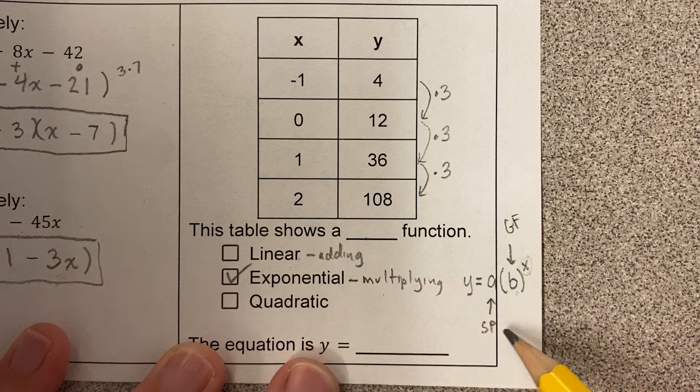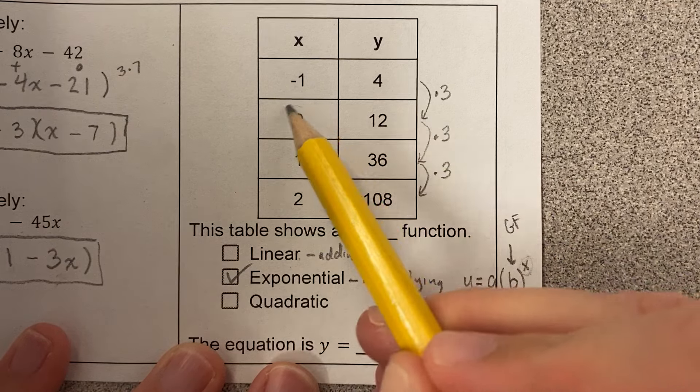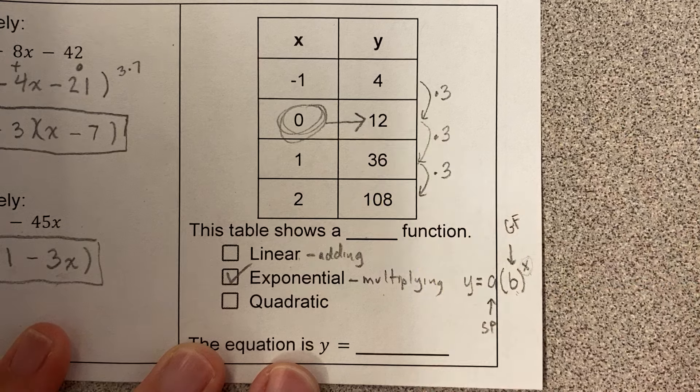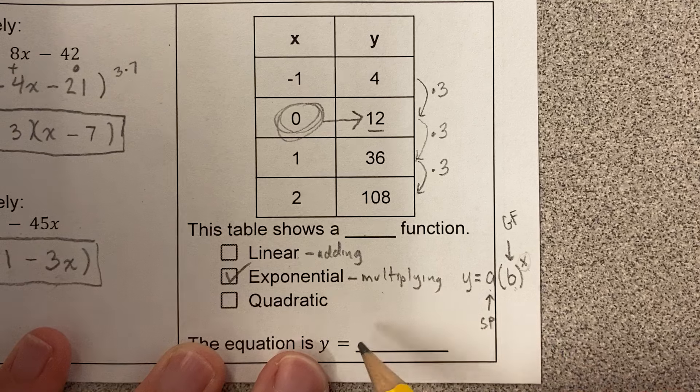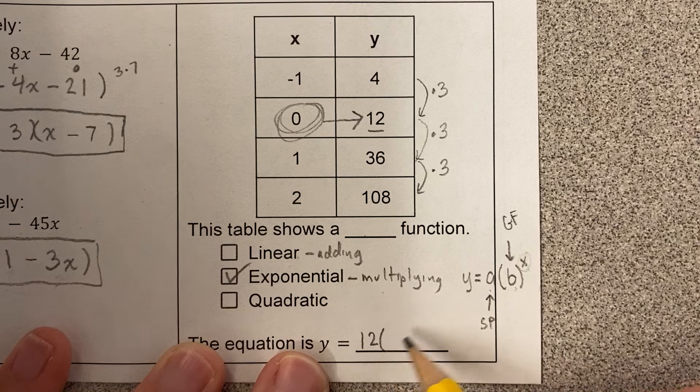So in this case, what's the starting point? What we have to look for is where the x is 0. That is the starting point. So in this case, the starting point is 12. So the equation is y equals 12 times the growth factor to the power of x.